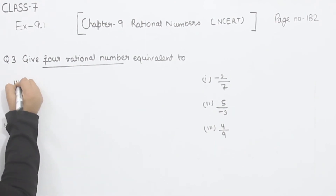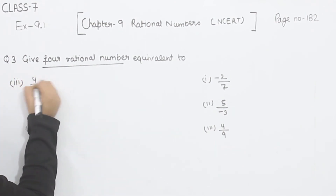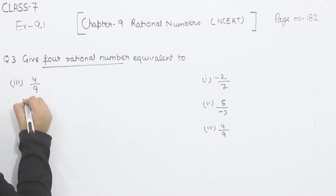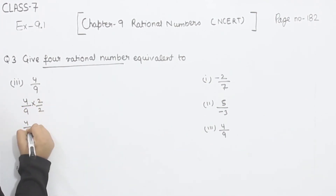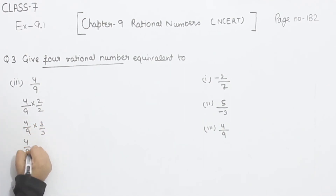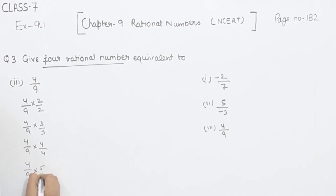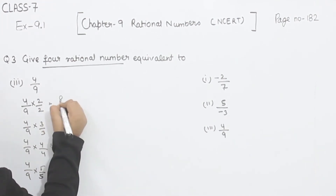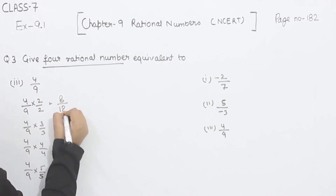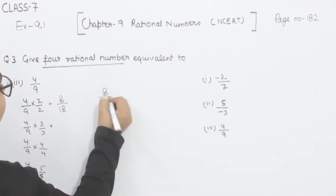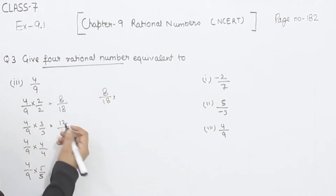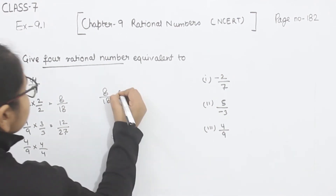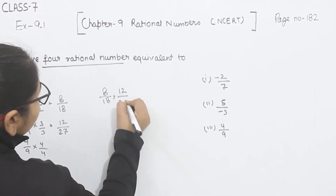Now part 3 — the rational number is 4 by 9. We are going to multiply it by 2, 3, 4, and 5. So 4 twos are 8 and 2 nines are 18, giving 8 by 18. Now 4 threes are 12 and 3 nines are 27, giving 12 by 27.